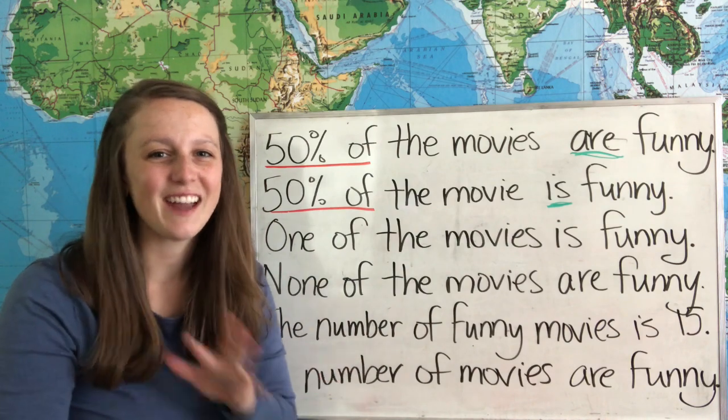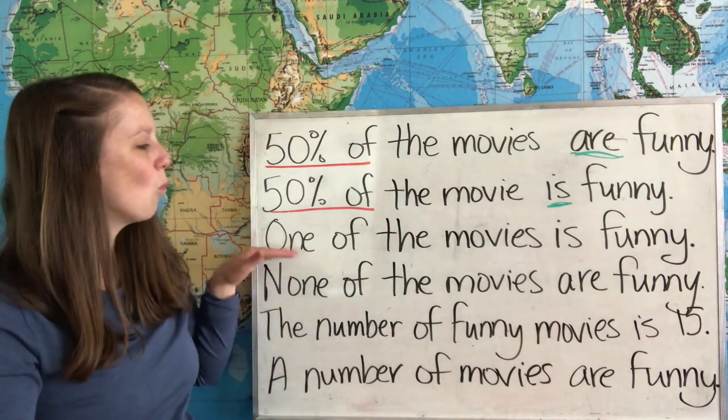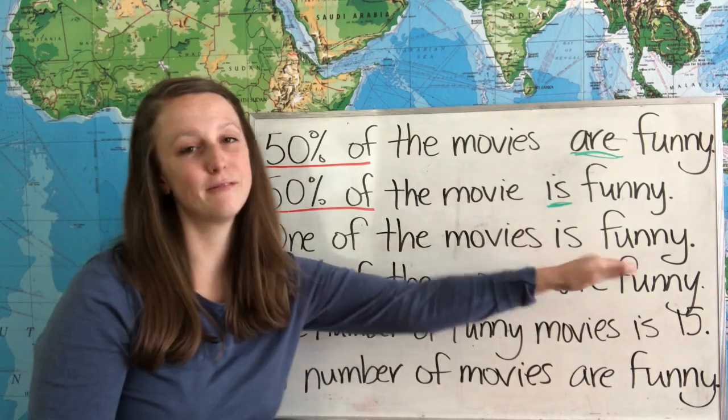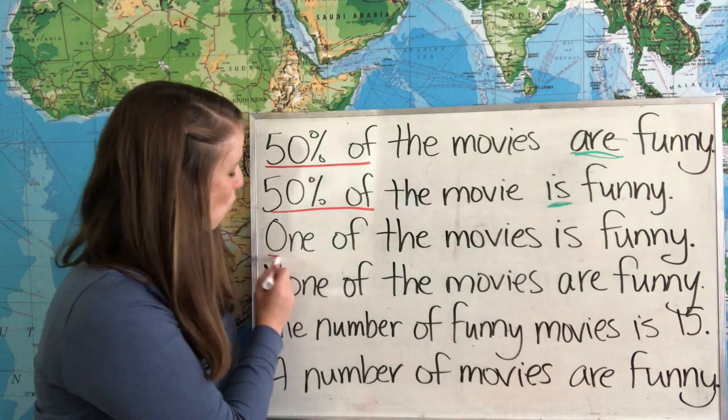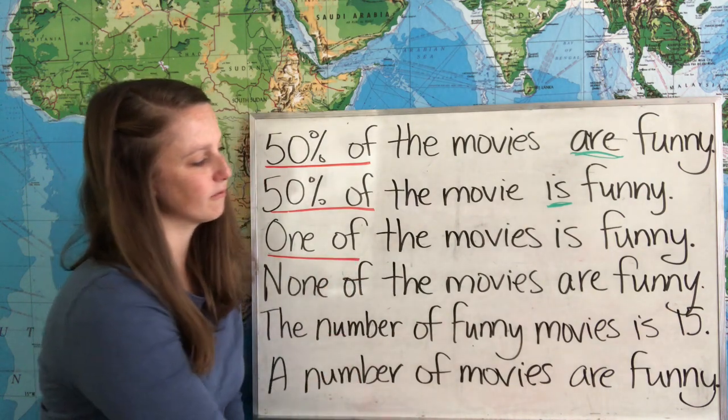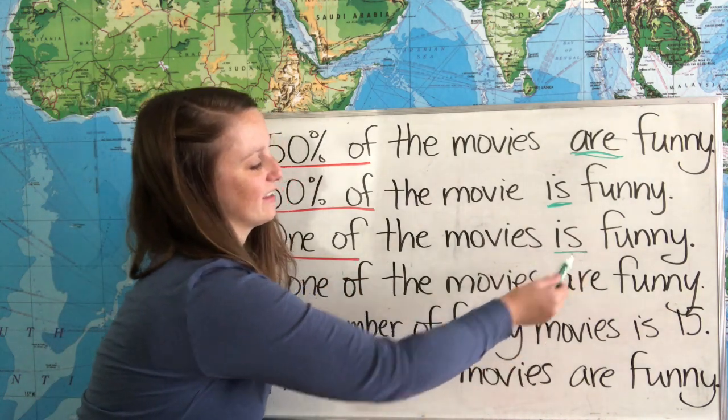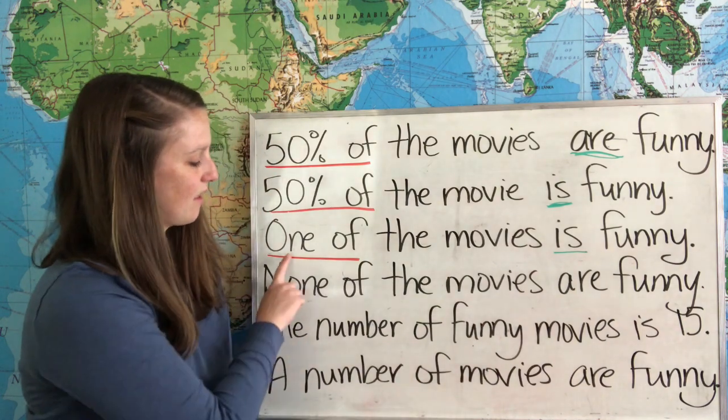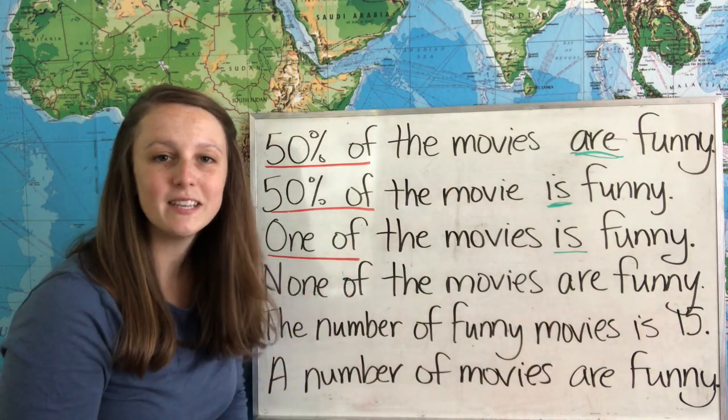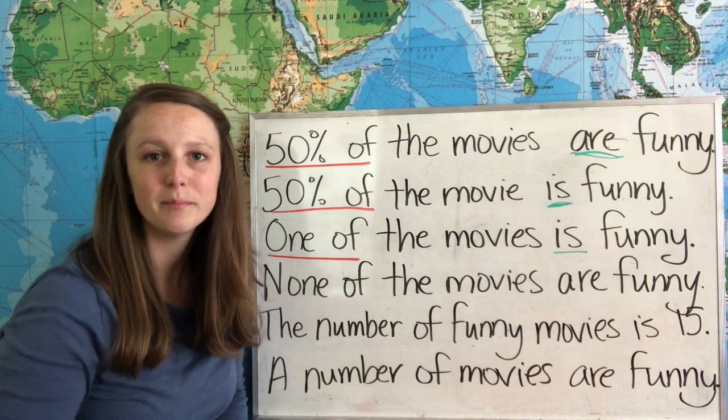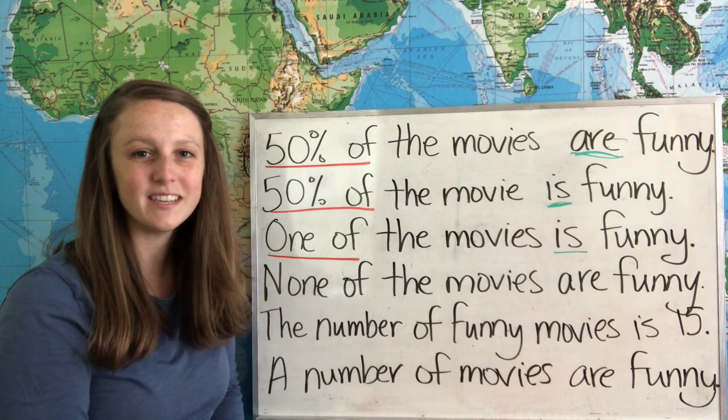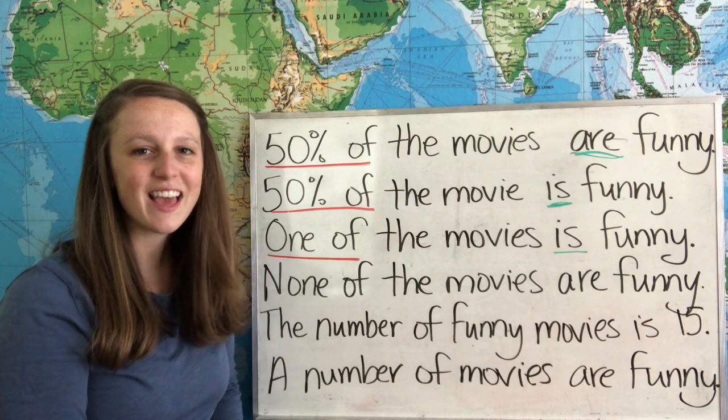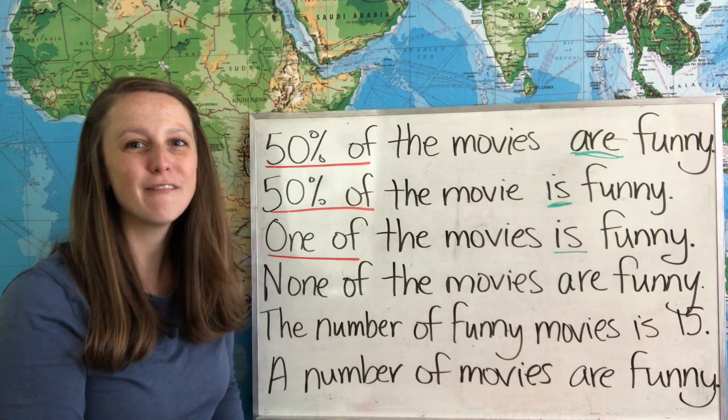Now let's look at our next example. One of the movies is funny. In this case our expression of quantity is one of, and our verb is the singular is. Now one of will always take a singular verb because it's one. The same is true for other expressions of quantity that mean one, like each of or everyone of.